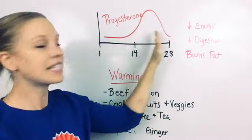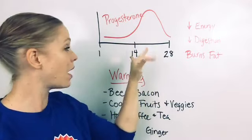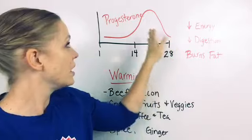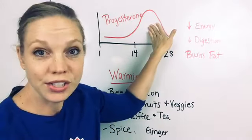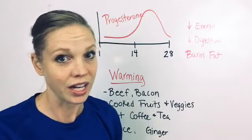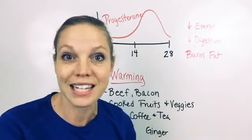For the second couple of weeks here from the time that you ovulate until the end of your cycle, your body is going to be higher in progesterone. Progesterone is a hormone that's kind of the complete opposite of estrogen and does completely different functions in the body.